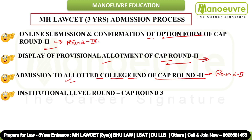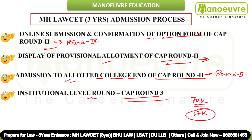After Round 1 and Round 2, there is an institutional level round — CAP Round 3. If seats are still vacant in a college after Rounds 1 and 2, you can apply for the institutional round. This covers remaining institute seats as well as management quota seats. There is also a CAP Round 4 if seats are still available. After 4 rounds, generally no seats remain vacant in MH Law CET 3 years, because around 68,000 to 70,000 students are applying and there are only 17,000 seats across Maharashtra — so competition is very high.